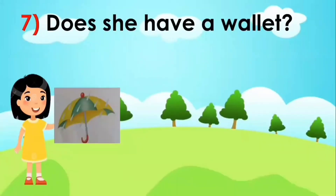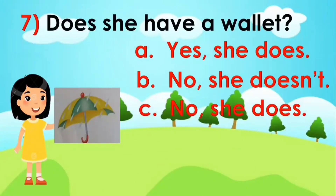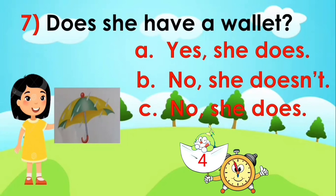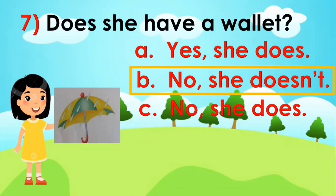Next, does she have a wallet? A: yes, she does. B: no, she doesn't. C: no, she does. Your time starts now. Time is off. The answer is letter B.